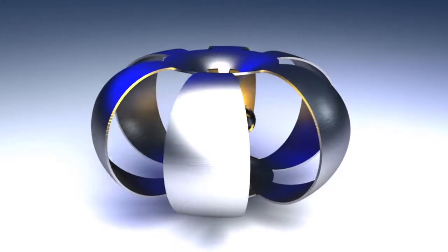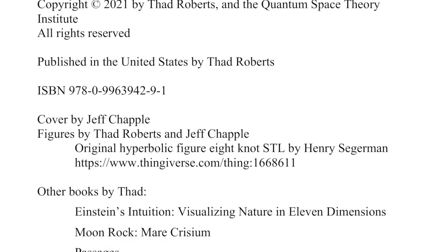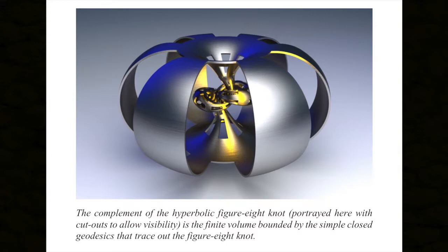This image is a rendition extended originally from Henry Siegerman's beautiful original STL work on Thingiverse — a link is in the intro page. The complement of the hyperbolic figure-eight knot, portrayed here with cutouts for visibility, is the finite volume bounded by the simple closed geodesics that trace out the figure-eight knot. If you imagine being a small ant walking along the surface, trying to go through the neck and come back to where you started in the shortest path, every point on the surface that you start from traces out the entire surface.